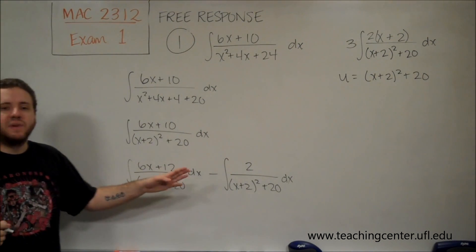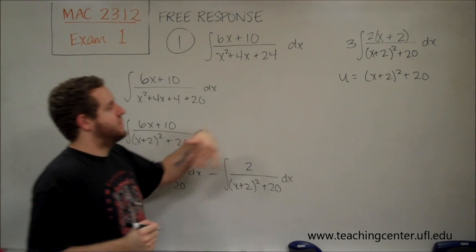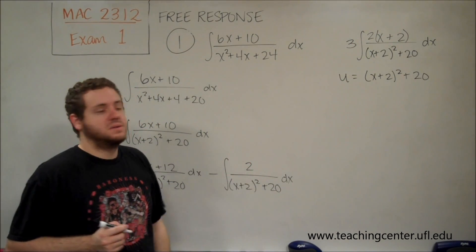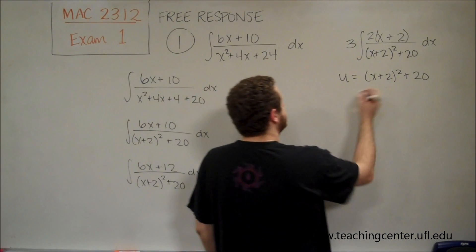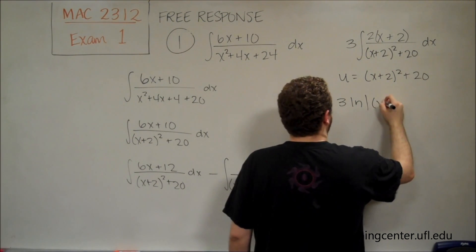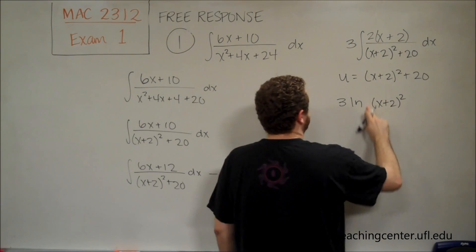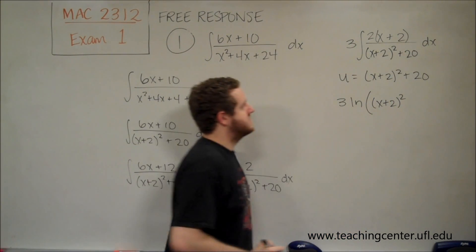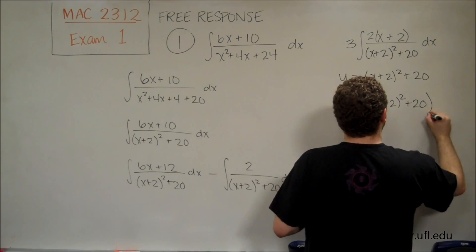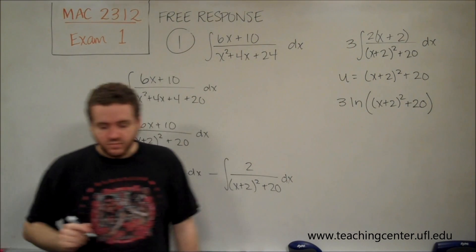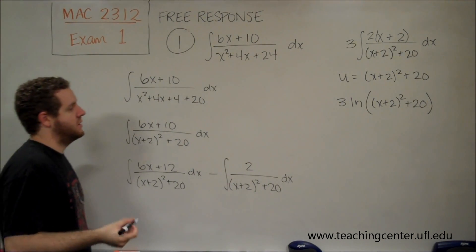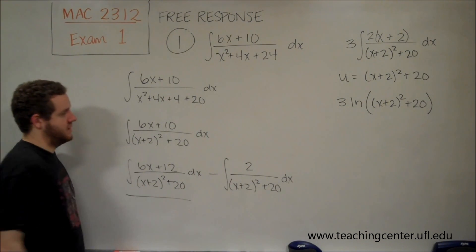So basically, even though I could factor out 6, I'll just factor out 3, because then the numerator is exactly the derivative of the denominator, and therefore this integral just becomes 3 ln of the denominator, and then you actually don't need absolute value because the denominator is always positive anyway. So we have 3 times ln of x plus 2 squared plus 20, and that's the value of this integral right here.